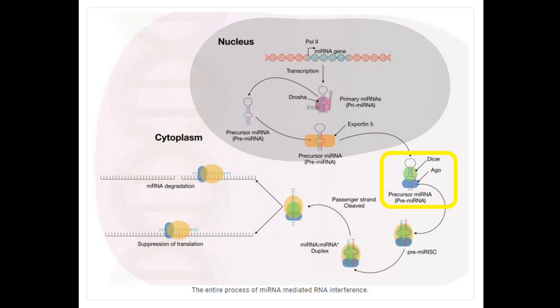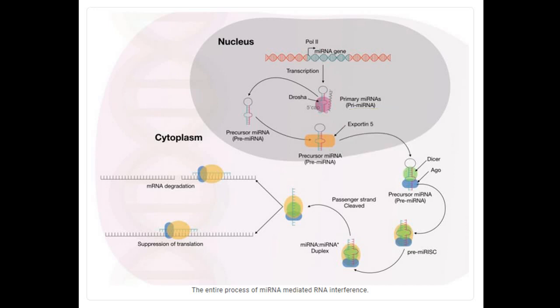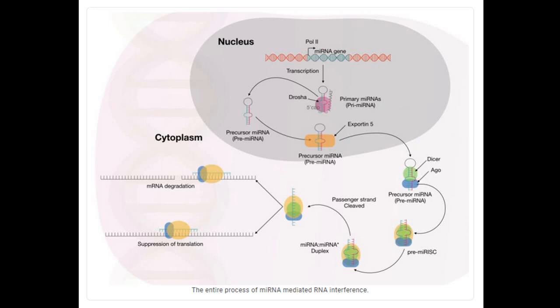In the cytoplasm, the enzyme Dicer cleaves the pre-microRNA at the loop-stem junction — in the case of small hairpin RNA (shRNA) — and creates a double-stranded microRNA with a two-nucleotide overhang at the 3' end. One of the double-stranded RNA strands, known as the guide strand, is complementary to the target mRNA, while the other is the passenger strand.